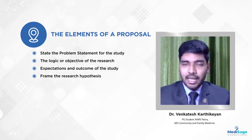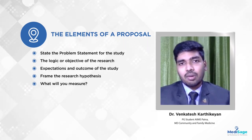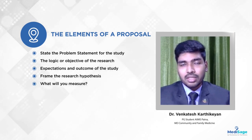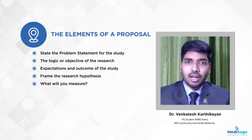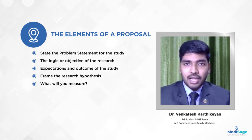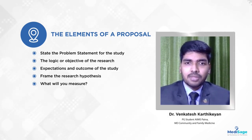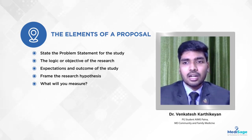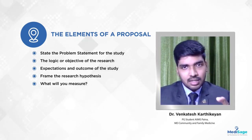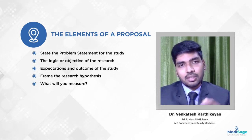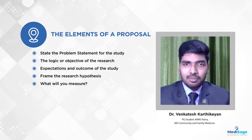The next topic is the aims. What are the aims of the study — why you are doing this — should be mentioned here. How you are going to do it will be in your objectives. An objective always includes an action word. For example, the objective would be 'to estimate the prevalence' — where 'estimate' is the action word. Those kinds of action words should be included when framing your objectives.